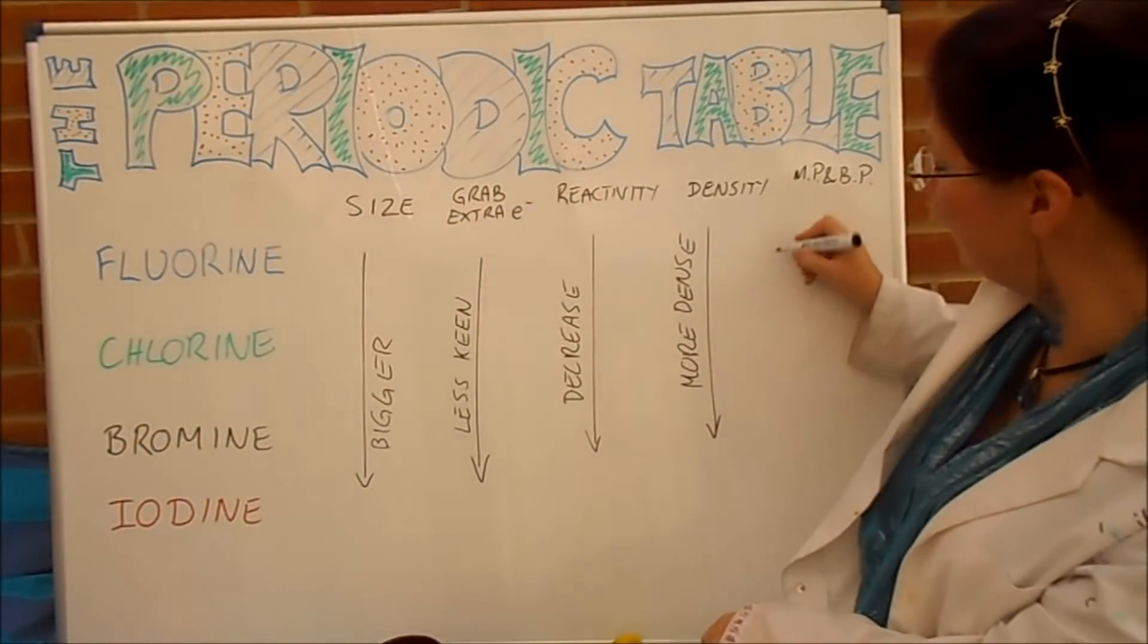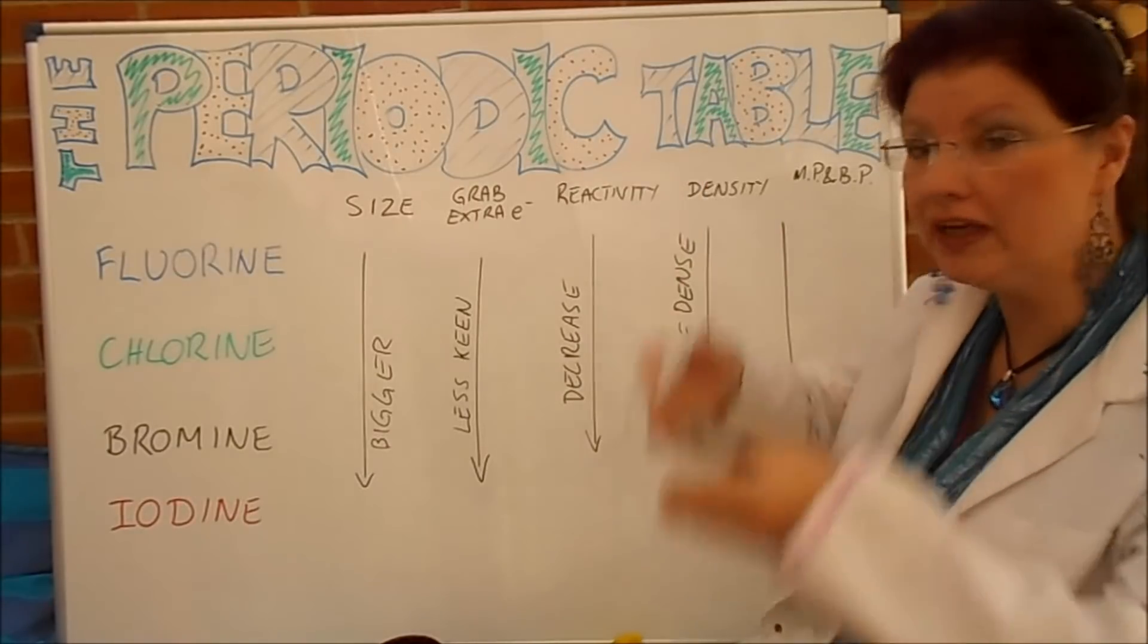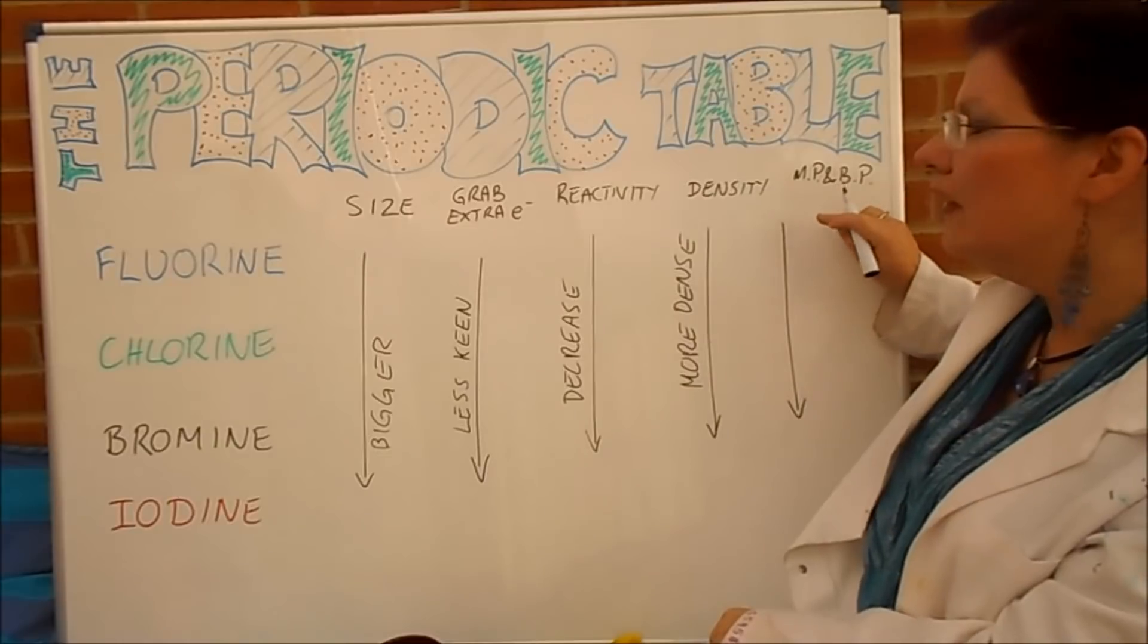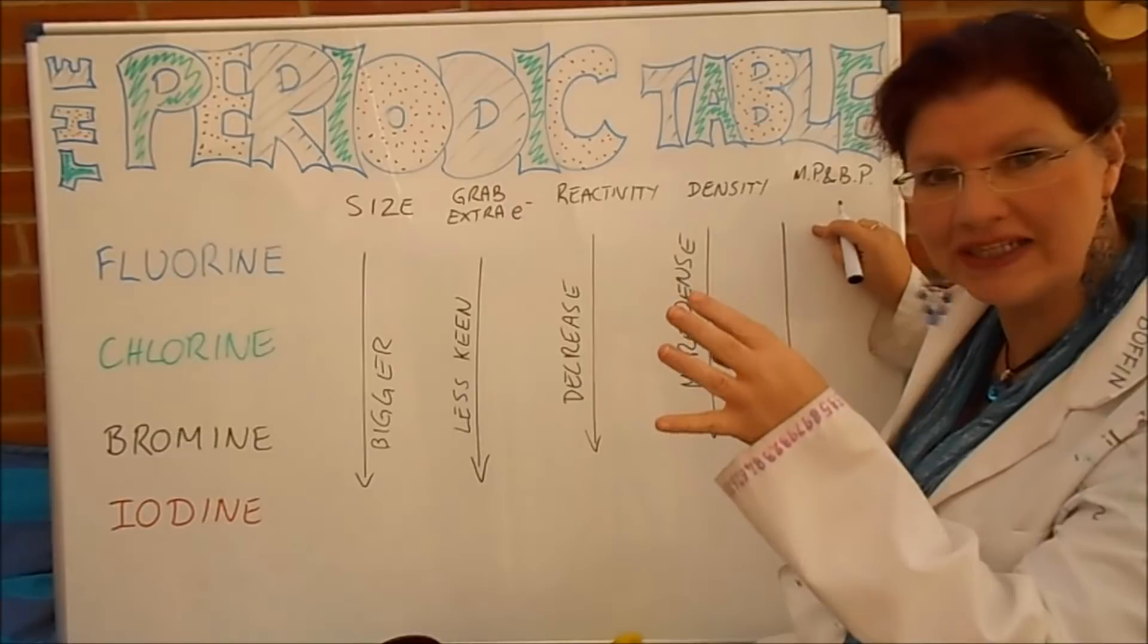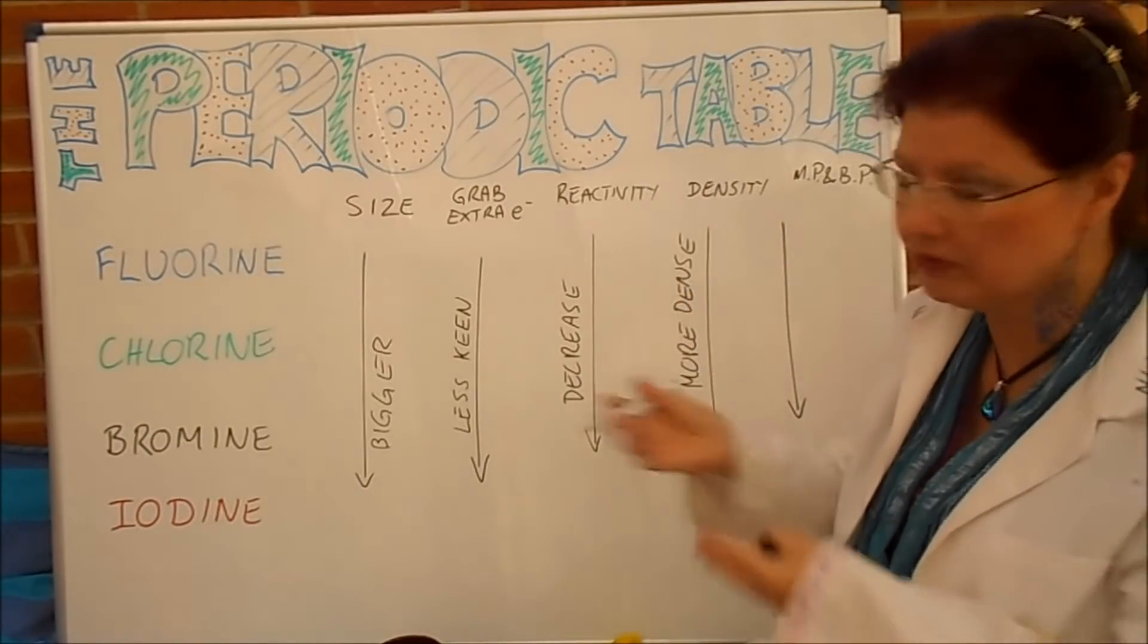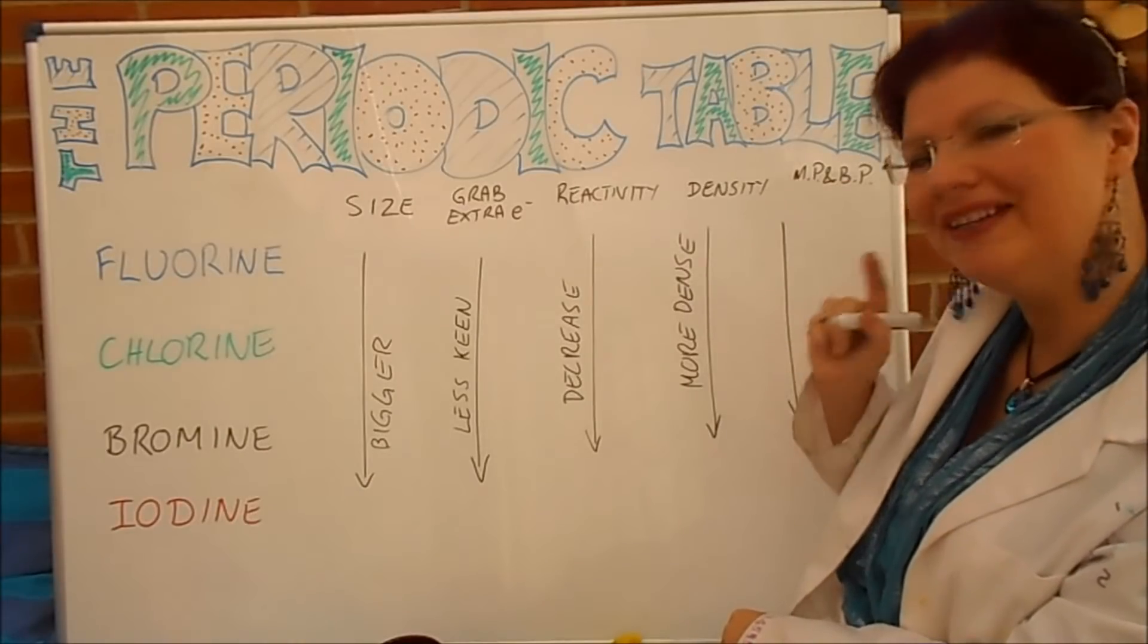As we go down the group, melting point and boiling point—by the way, they always go together. If things have an increasing melting point, they've got an increasing boiling point as well. Fluorine must have quite a low boiling point because it's a gas. Iodine, on the other hand, must have a high boiling point because it isn't a gas. So as we go down the group, melting point and boiling point increase.